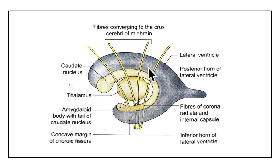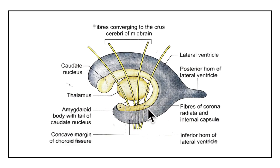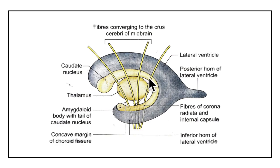Now let us learn about the basal nuclei. This diagram shows a lateral view of the structures inside the cerebrum. Here we have the lateral ventricle and the parts of the basal nuclei, the thalamus, and the fibers of the corona radiata and the internal capsule. Basal nuclei are subcortical intracerebral masses of grey matter forming important parts of the extrapyramidal system. Subcortical means it lies under the cerebral cortex; intracerebral means it is inside the cerebrum.